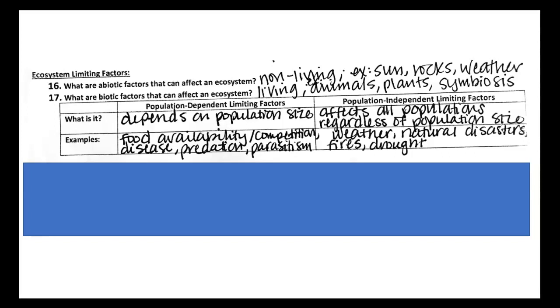So tornadoes, natural disasters, tsunamis, things like that. If they're going to happen, they're going to happen and it doesn't matter. It can't be attributed to the population size. It's just going to happen naturally and it may impact one or two living organisms or it may impact a whole bunch of them.